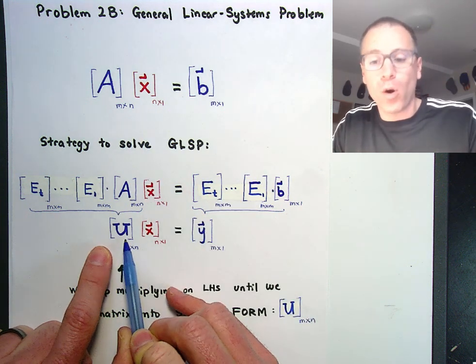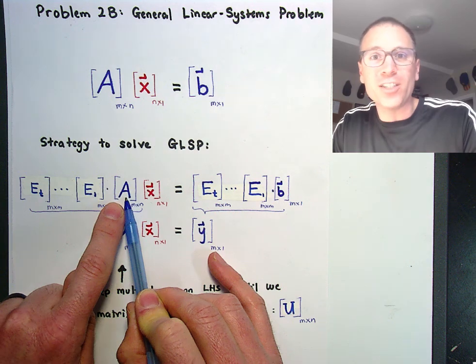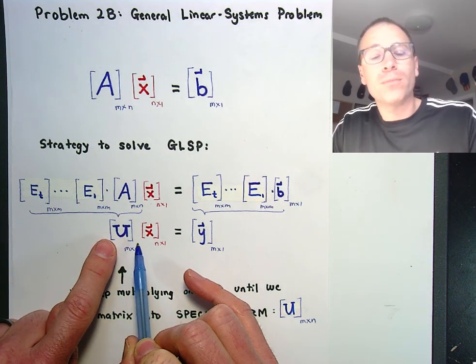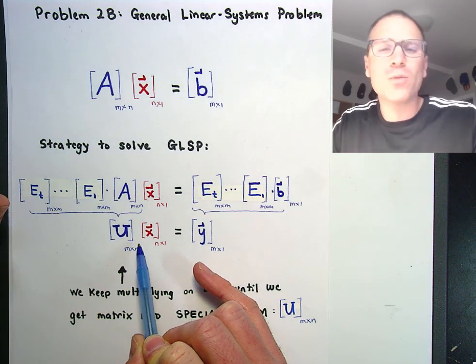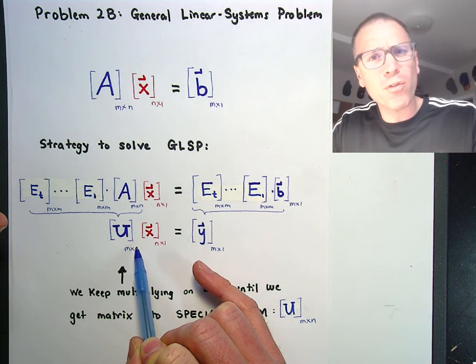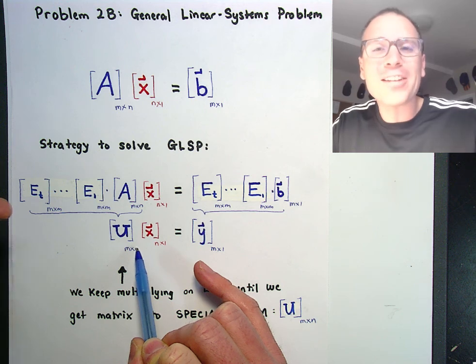So the special form that we're going to translate our original matrix into is called row echelon form, or more advanced, reduced row echelon form. You might ask, well, what the heck is row echelon form? What does that look like? That's a great question.